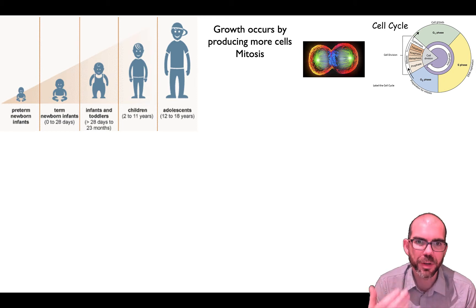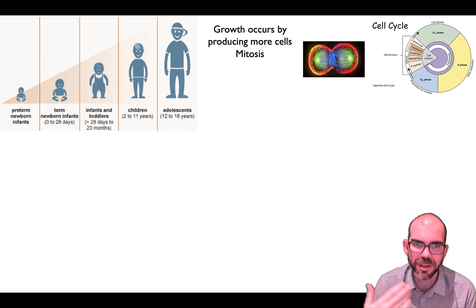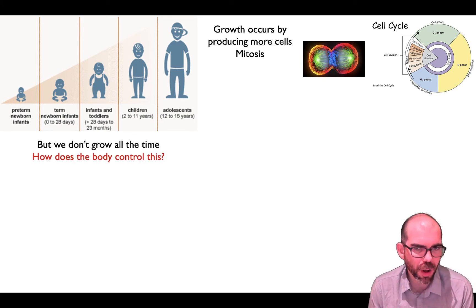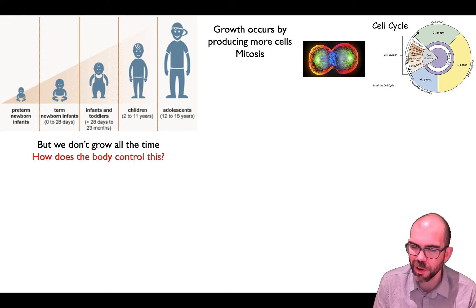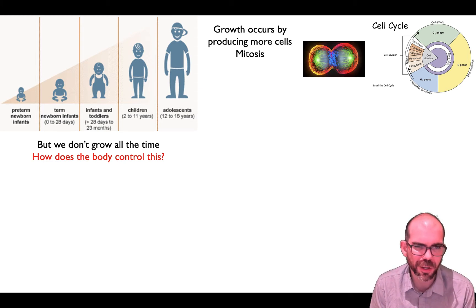As you get bigger and bigger, something is stimulating your cells to reproduce so that you can make more cells and develop. But we don't grow all the time. You go through growth spurts, and once you hit adulthood, it's pretty much a hard stop in terms of growing height-wise. So how does your body control this?